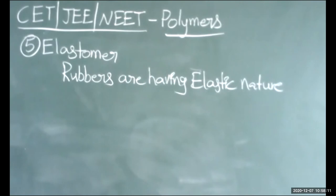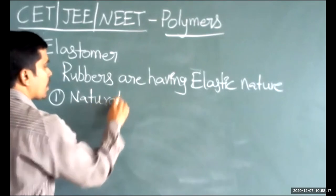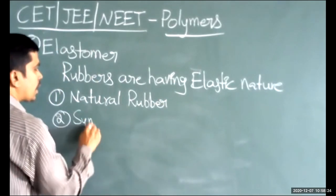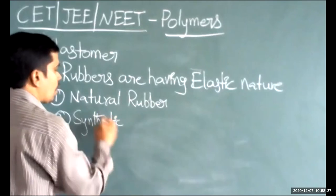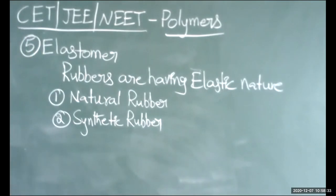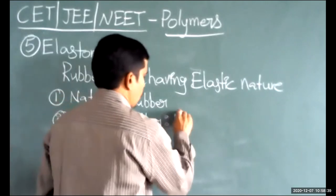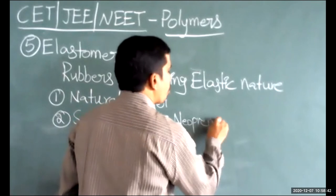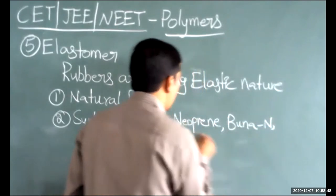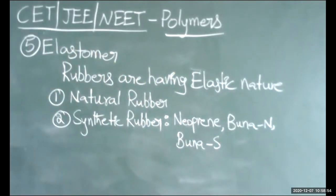Rubbers are classified into two types: natural rubbers and synthetic rubbers. The examples given in the textbook for synthetic rubbers are neoprene, buna-N, and buna-S.